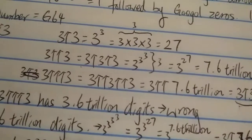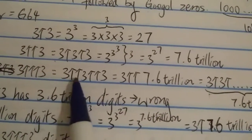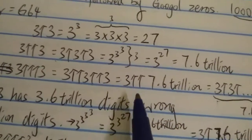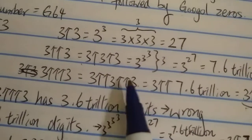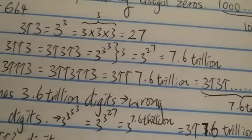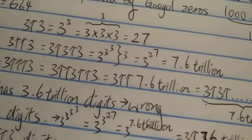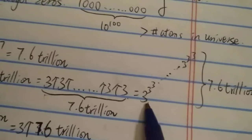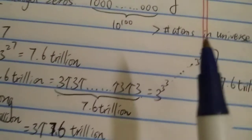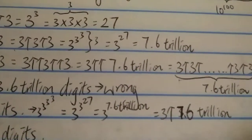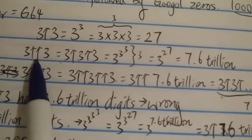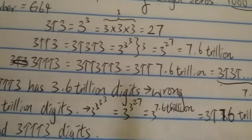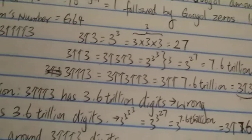What about one more arrow: 3 ↑↑↑ 3? It's 3 ↑↑ 3 ↑↑ 3 — three 3s with double arrows in between. Since 3 ↑↑ 3 is 7.6 trillion, this equals 3 ↑↑ 7.6 trillion, which is a power tower of 3 that is 7.6 trillion levels high. A double arrow represents a power tower: 3 ↑↑ 3 is a power tower of 3 that's 3 levels high, and 3 ↑↑↑ 3 is a power tower 7.6 trillion levels high.